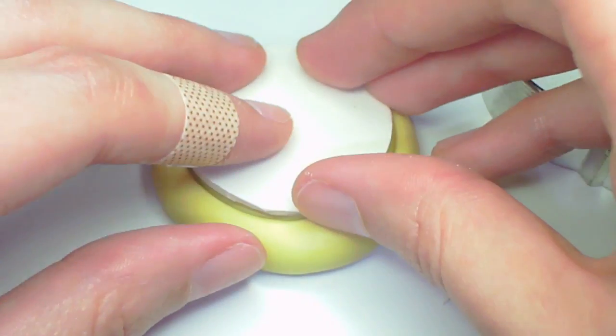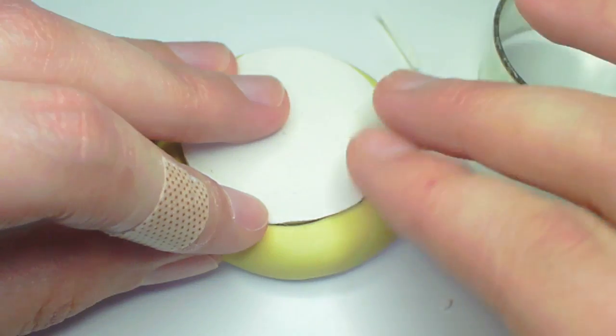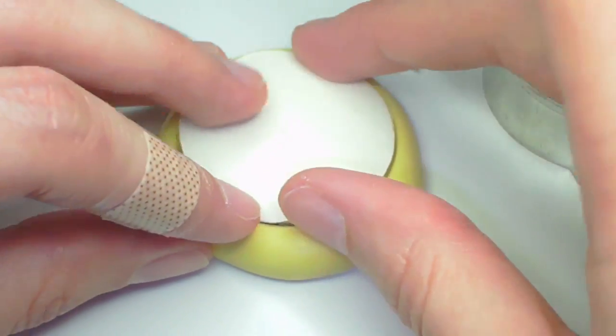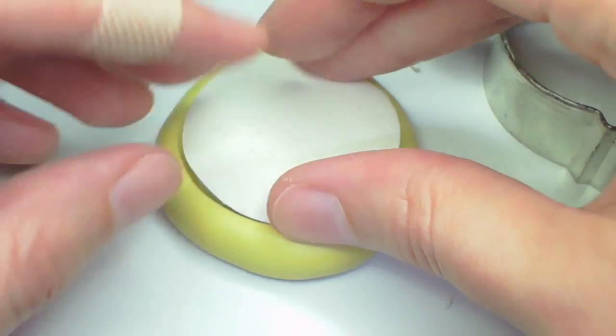Then press the circle into the plate mold very gently. You don't want to squish any of the texture. You just want it to form to the plate shape.